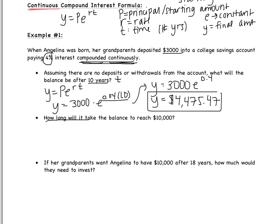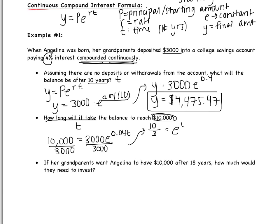Setting up the equation: 10,000 equals 3,000 times E to the power 0.04T. I need to get E alone, so I divide both sides by 3,000. Since 10,000 divided by 3,000 is 10/3, I have 10/3 equals E to the power 0.04T. Now I need to break apart E and the exponent. There's no more simplifying, so I switch to logarithmic form.